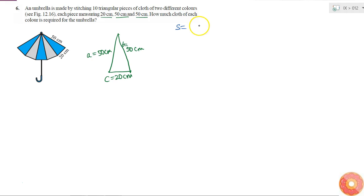So before that I need to find the semi-perimeter which is A plus B plus C by 2, that is equal to 50 plus 50 plus 20 by 2 or 60cm. So if this is the semi-perimeter,